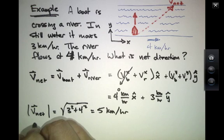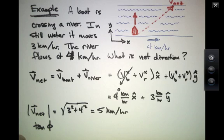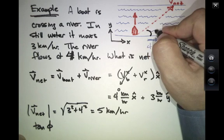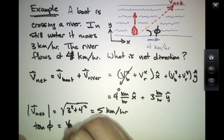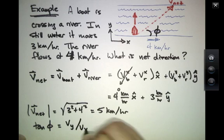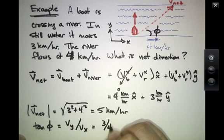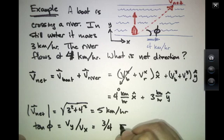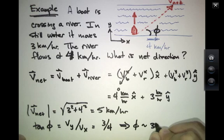And this boat will be off course by an amount that we can calculate. If that's the angle phi with respect to the x-axis, then the tangent of phi is always equal to v_y over v_x. The y component was 3, the x component was 4. And so if the tangent is 3 fourths, this means that phi is about 37 degrees.